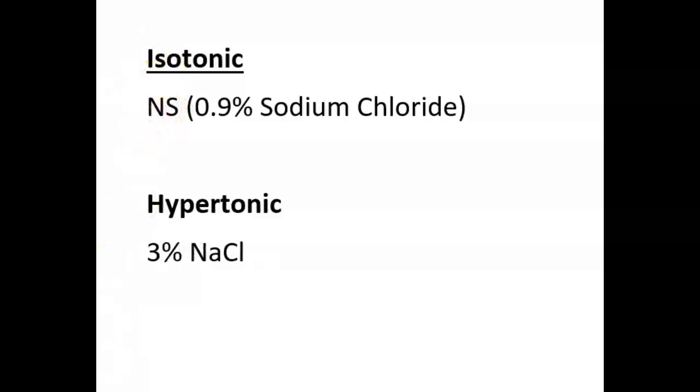In terms of isotonic versus hypertonic, a hypertonic solution with sodium chloride is 3%. I have memorized that my isotonic sodium chloride solution is 0.9%. So obviously, this whole number of 3% sodium chloride is a hypertonic solution.